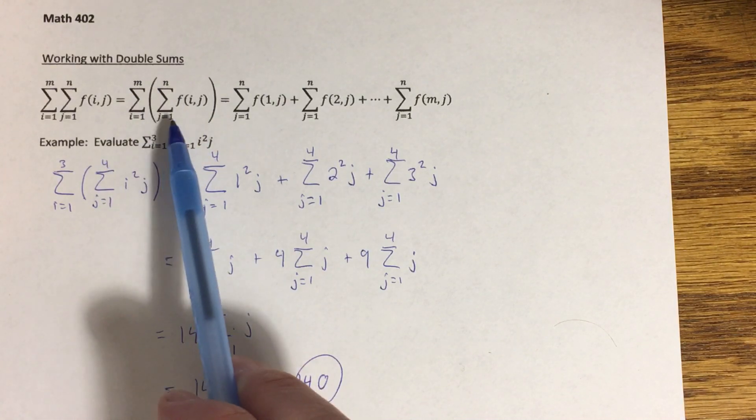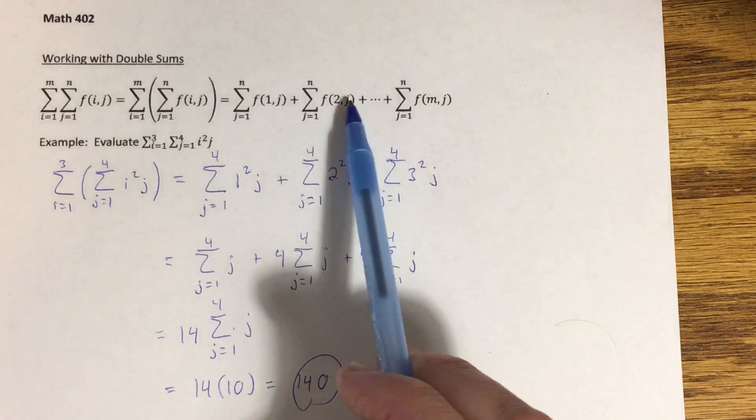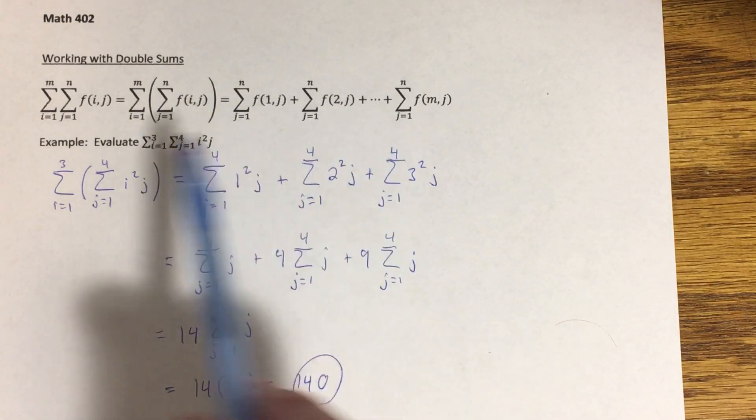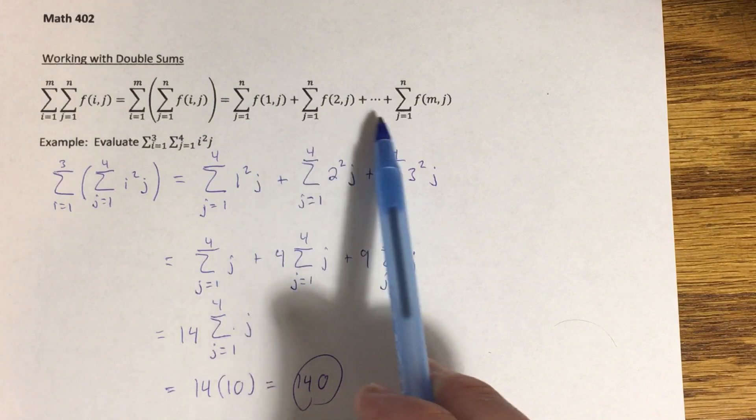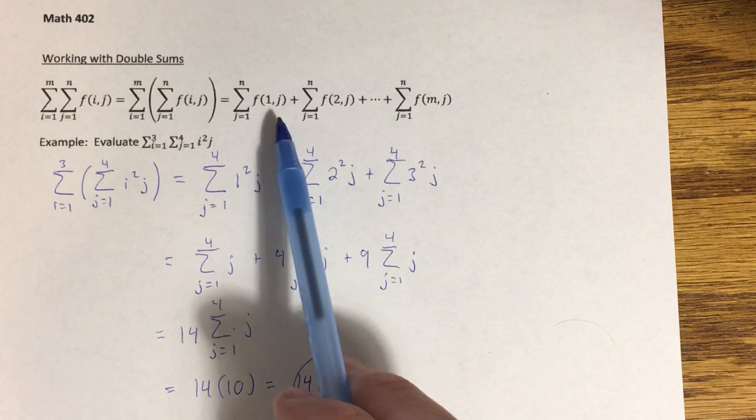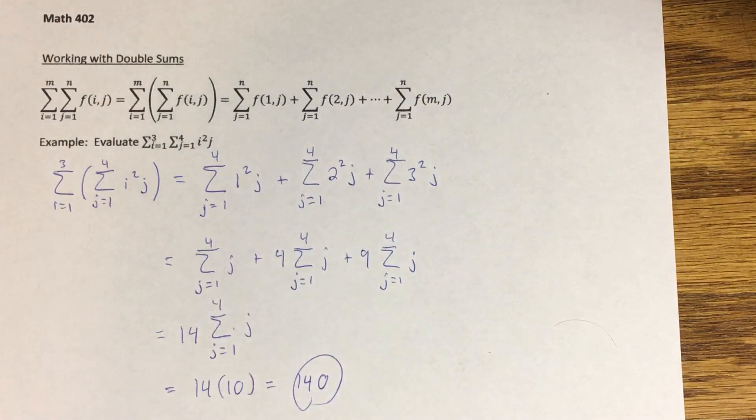Then I repeat that until I run all the way through from one to m, getting a total of m of these different summations here. I can evaluate each one of these as a normal summation, so we're not really going to have to do a whole lot of this in this class.